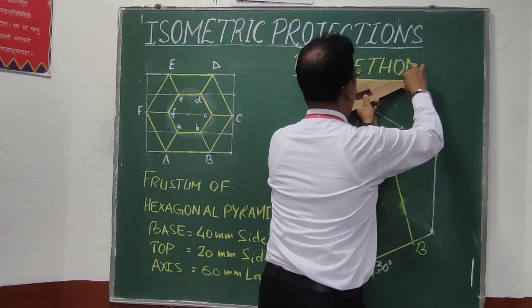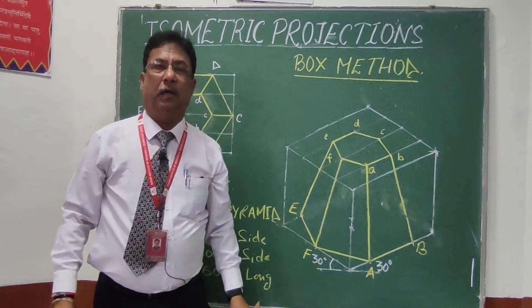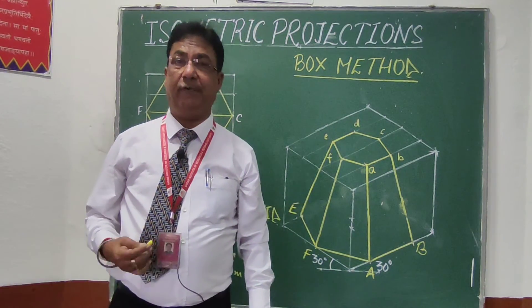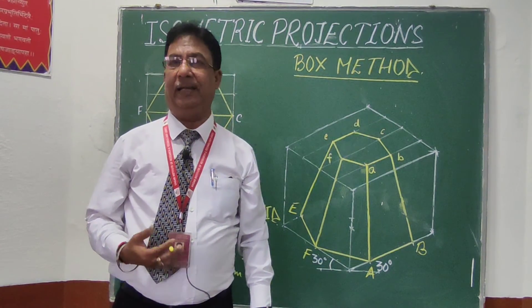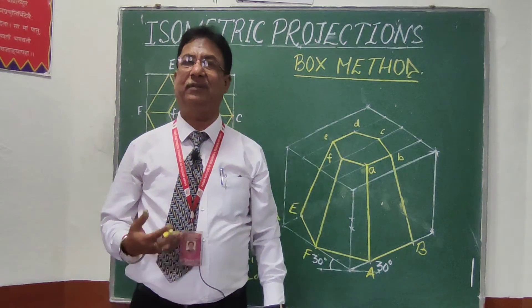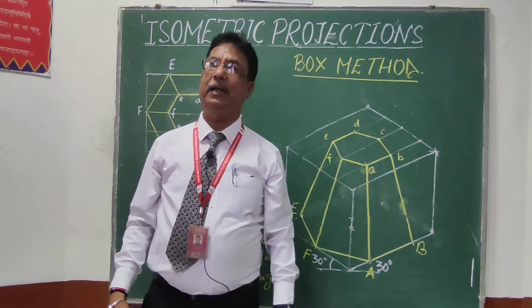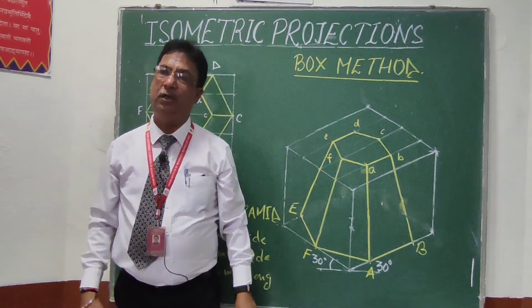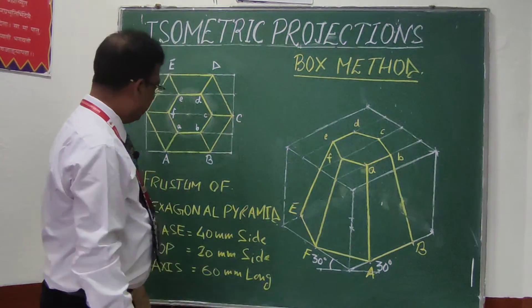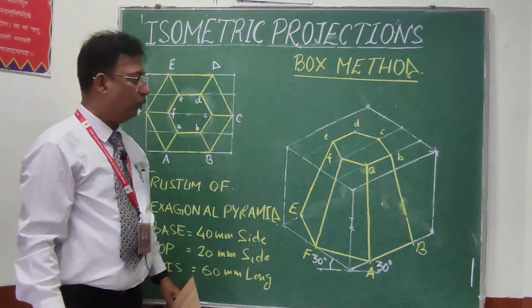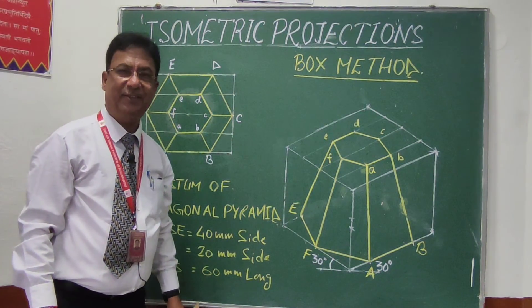This is a very interesting method known as the box method. With the help of this method you can draw the isometric projection or isometric view of any machine object as well. In the next class I will select a problem on machine drawing and take a small machine part to draw its isometric projection. I hope you understand this — draw this in your notebook. Thank you very much.